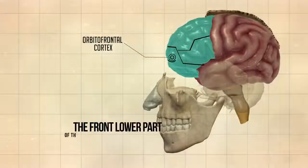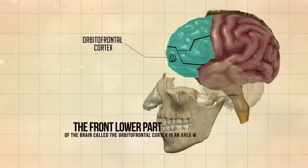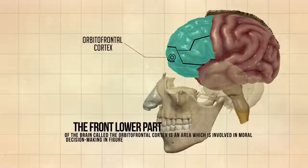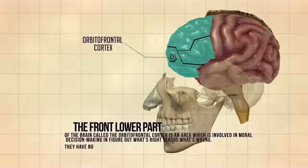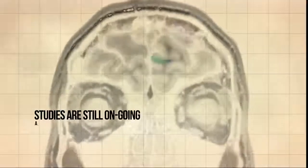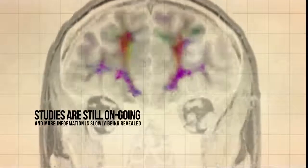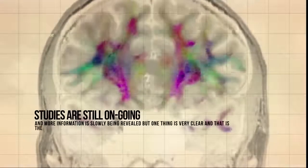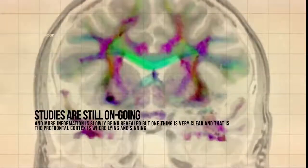The front lower part of the brain called the orbital frontal cortex is an area which is involved in moral decision-making and figuring out what's right versus what's wrong. They have noticed a similar pattern in the brain scans of criminals in this region. Studies are still ongoing and more information is slowly being revealed, but one thing is very clear and that is the prefrontal cortex is where lying and sinning takes place.